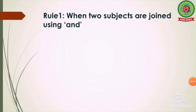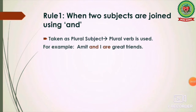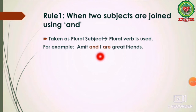The first rule is: when two subjects are joined using 'and,' they are generally taken as a plural subject, and therefore a plural verb is used. For example: 'Amit and I are great friends.' Here, 'Amit and I' are two subjects, so together they form a plural subject and we use the plural verb 'are.'